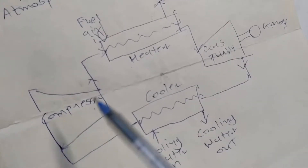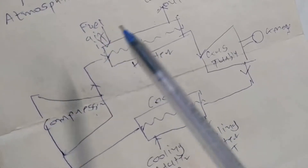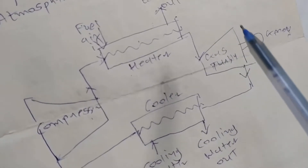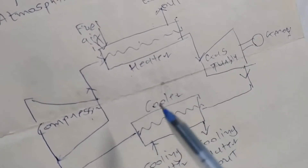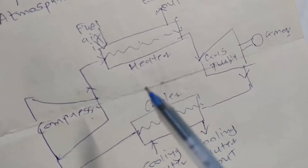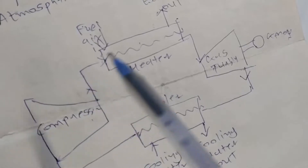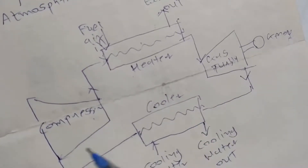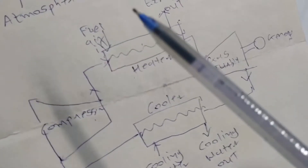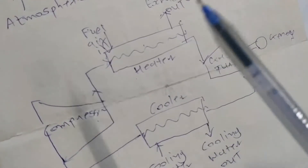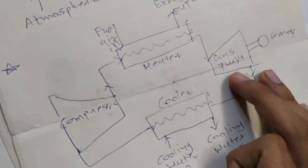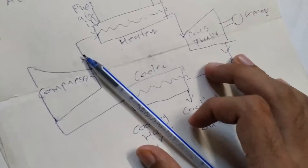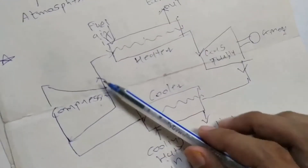The working fluid goes to the compressor, then to the heater-type heat exchanger, then comes to the gas turbine, and after that it gets cooled again by the cooler-type heat exchanger, then back to the compressor. This is what happens in the closed cycle gas turbine. Now let's talk about the advantages and disadvantages of the closed cycle gas turbine.